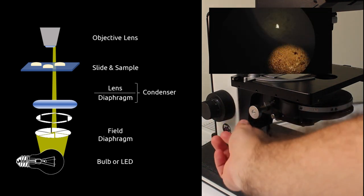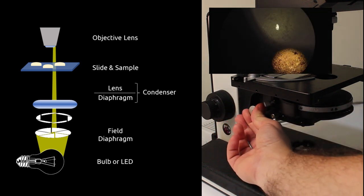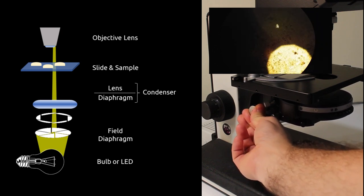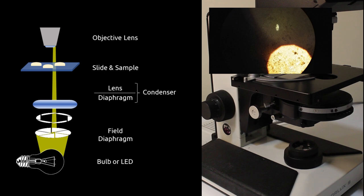To focus, turn the knob attached to the condenser until the bright point in the image is a sharp-edged hexagon. You don't have to close this down the full way to do this. You just need it closed down enough to be able to see the edge of that hexagon. What we've done here is we've focused on the field diaphragm, which makes sure that we're not focused on our light source.